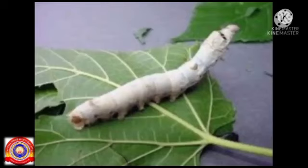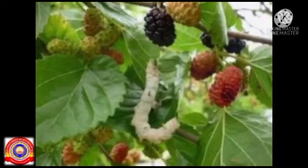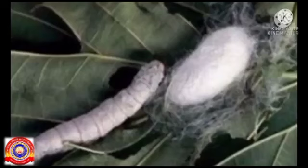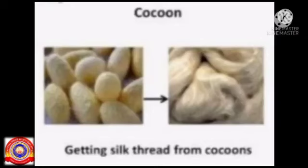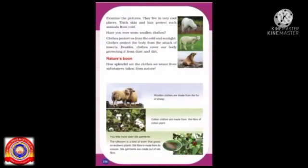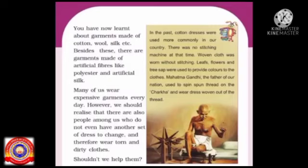Do you know what silk worm is? It is a kind of worm that grows on a mulberry plant. We get silk fibers from its cocoon and we make silk cloth from these silk fibers. Okay, my dears, do you understand about the types of clothes?